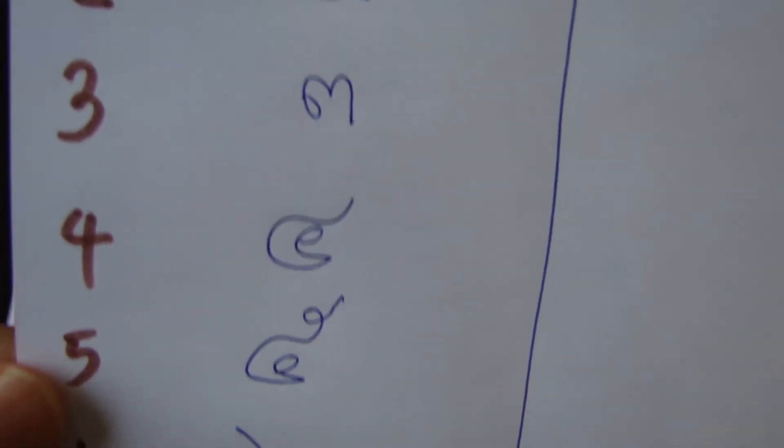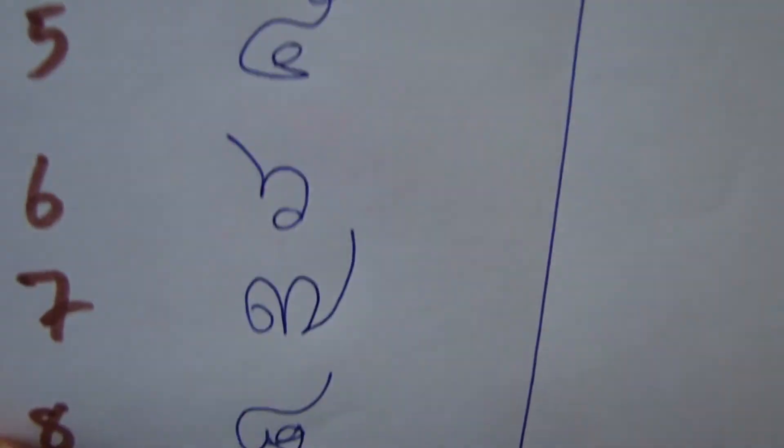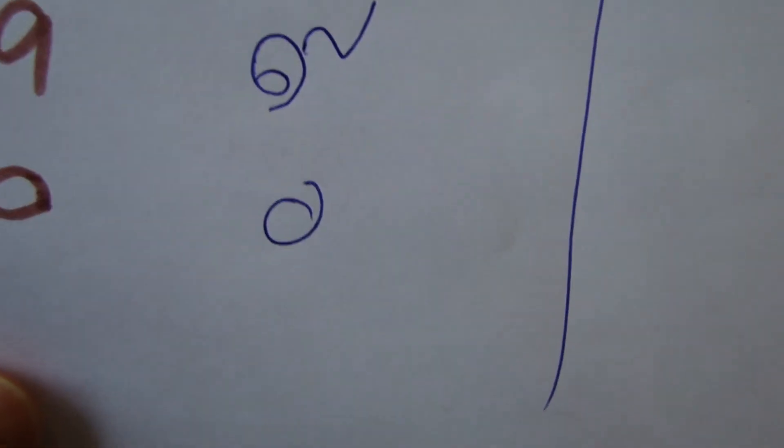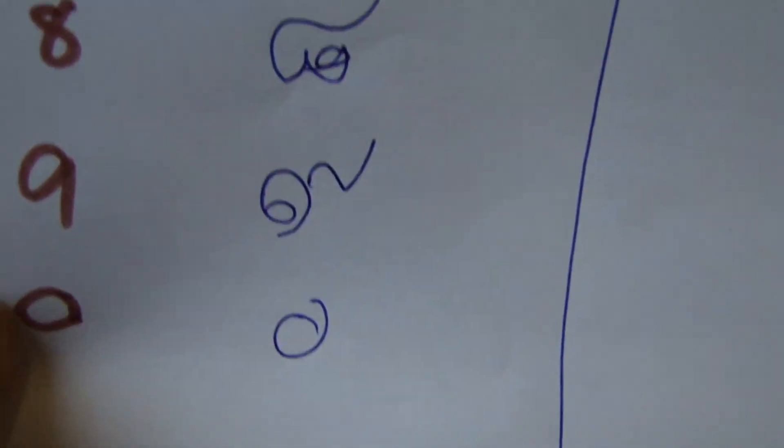Number 1, let's see first. Number 1, number 2, number 3, number 4, number 5, 6, 7, 8, 9, 10. Oh no, it's not 10, it's 0.